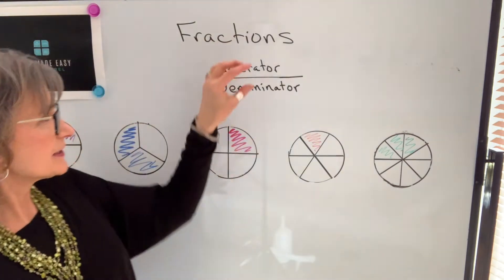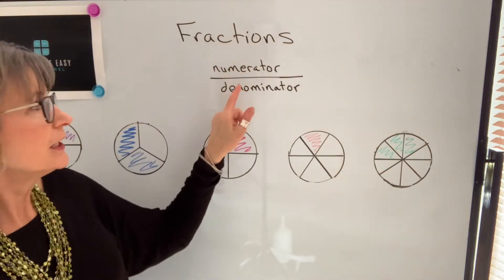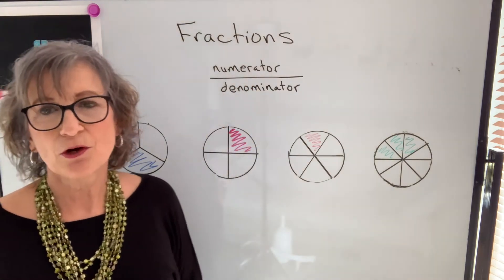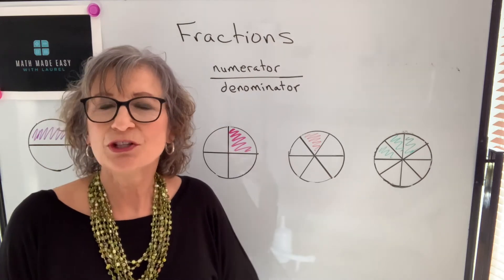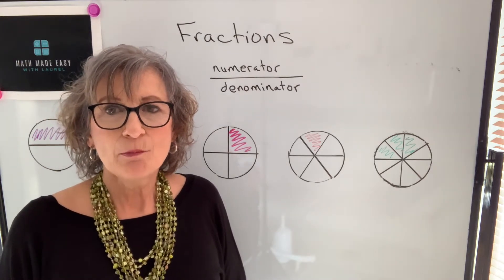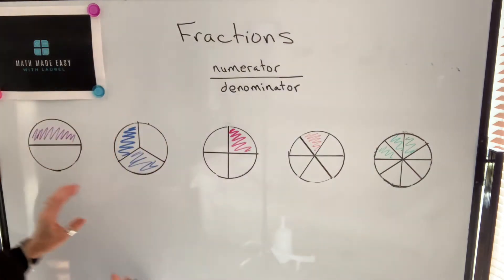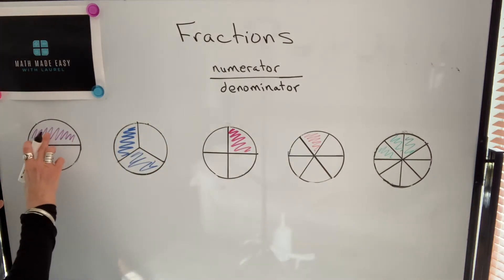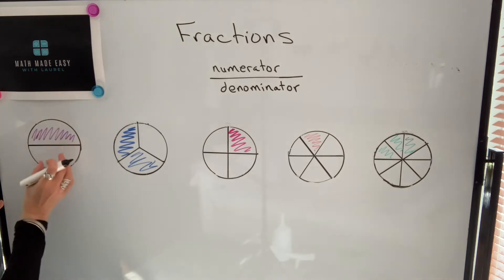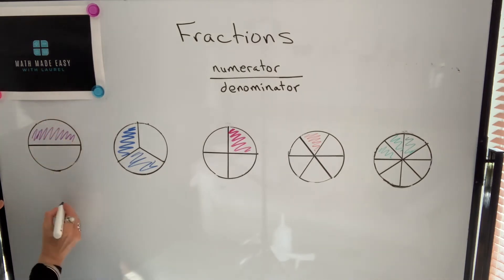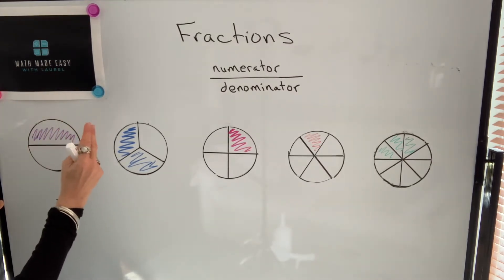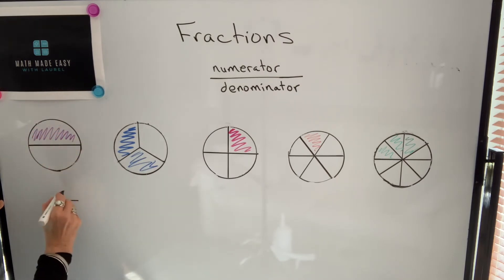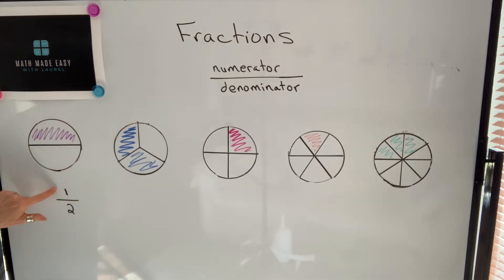A fraction will be described as some number that we call a numerator over some number we call the denominator. Don't get hung up on the words — you will hear me using them over and over, and you'll get more and more comfortable with them. If we had two pieces in total, the denominator will be two. The numerator will be the number of pieces you had — you had one out of two pieces, so you ate one half of the pie.